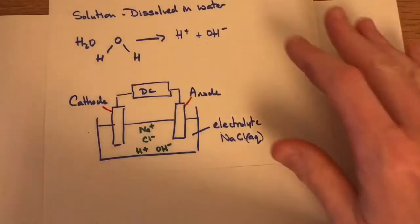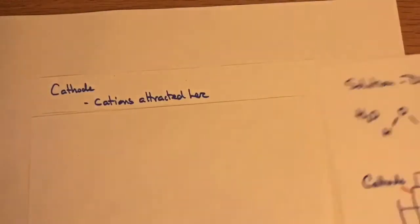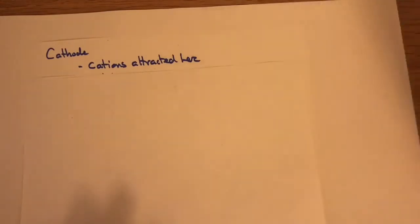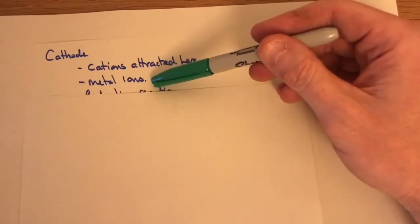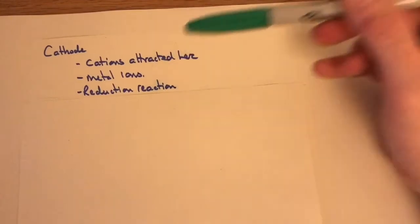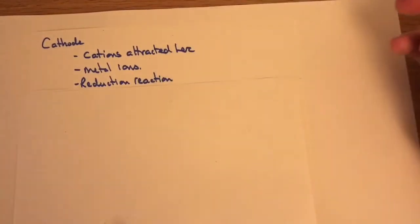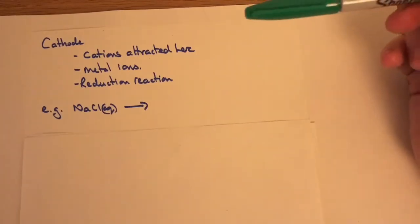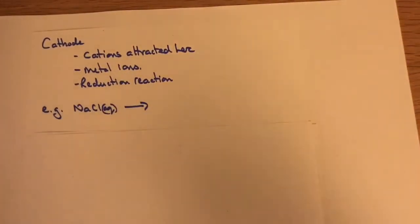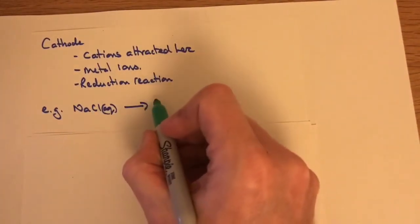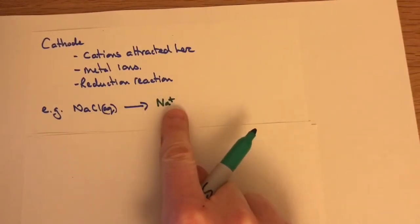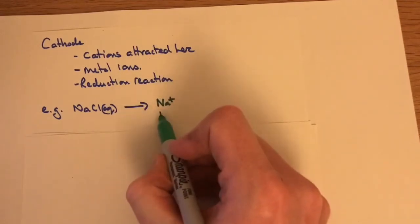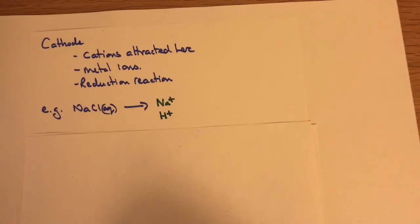At the cathode — remember, the cathode is so named because this is where the cations are attracted to. In our previous work we know cations are the metal ions, and when they get there, these metal ions undergo a reduction reaction. In a sodium chloride solution, the cations will be sodium (from the salt) and H⁺ (from the water). So we have two cations inside the solution.